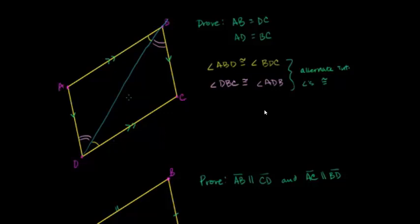We also see that both triangles — triangle ADB and triangle CDB — share this side in common, which is obviously equal to itself. We've just shown that both triangles have the pink angle, the shared side, and then the green angle. So we've shown by angle-side-angle that these two triangles are congruent.